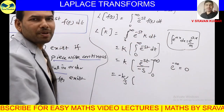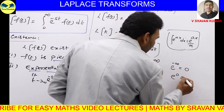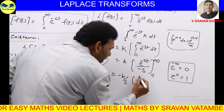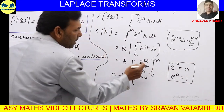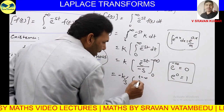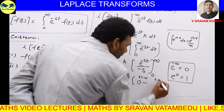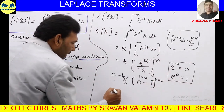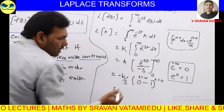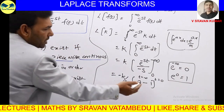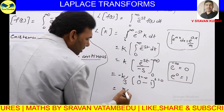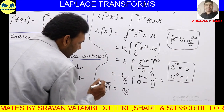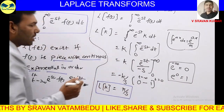Substituting the limits: when T = infinity, e^(−∞) = 0; when T = 0, e^0 = 1. So the result is −K/S · (0 − 1), which gives K/S. Therefore, the Laplace transform of a constant K is K/S.